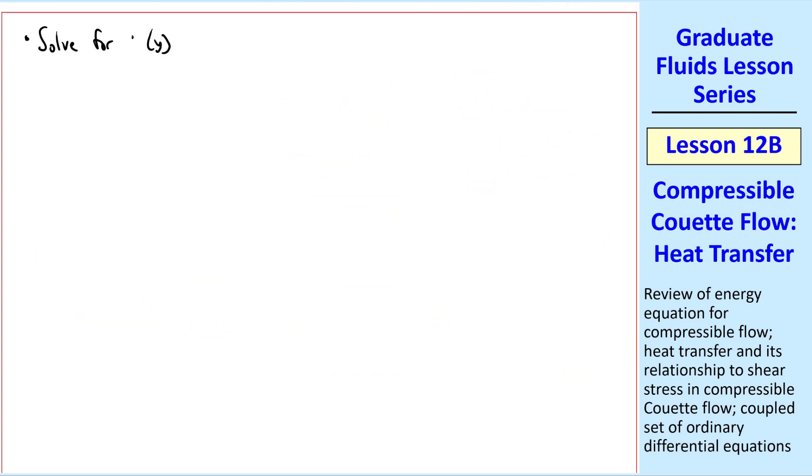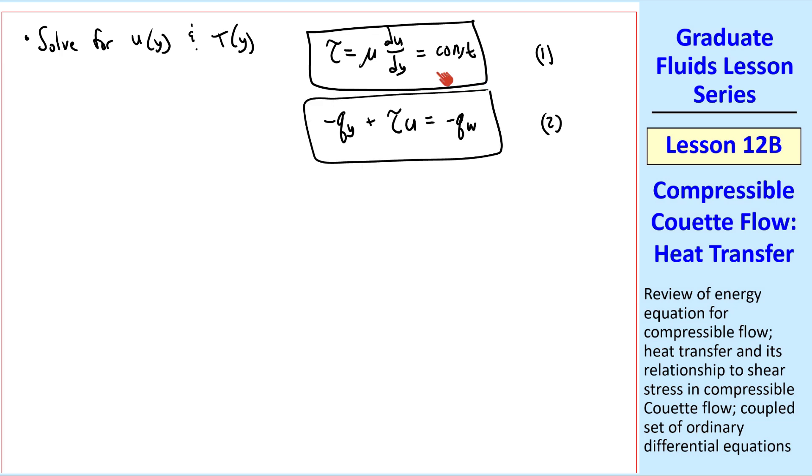Now let's try to solve this problem for u of y and t of y. Our equations are tau equal mu du dy, which is equal to a constant. That was our equation 1. And I'll rearrange equation 5 as negative qy plus tau u equal negative qw. Equation 1 comes from the momentum equation. Equation 2 comes from the energy equation.